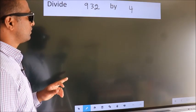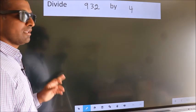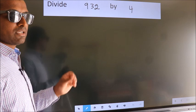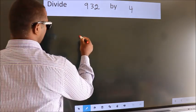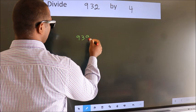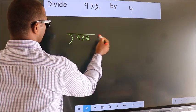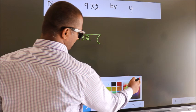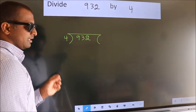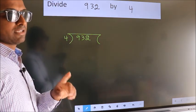Divide 932 by 4. To do this division we should frame it in this way. 932 here, 4 here. This is your step 1. Next.